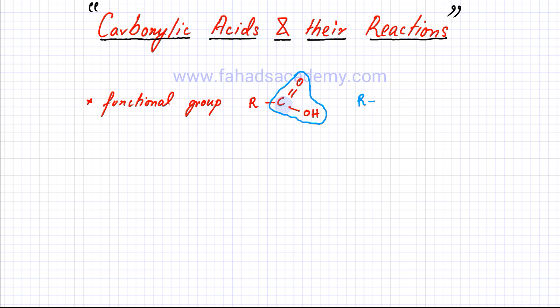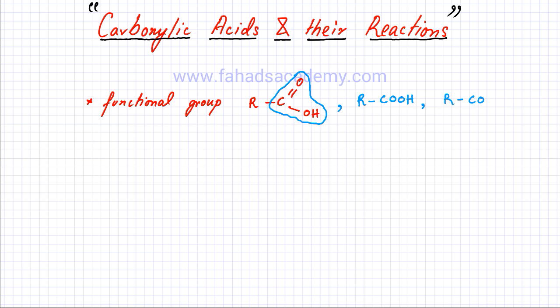Another way to write the same functional group is to represent C double bond O and OH as COOH — that's the compressed version. It's also sometimes shown as R (the carbon chain) followed by CO₂H, writing a small two next to O to show two oxygen atoms. These are three representations of the functional group present in every carboxylic acid.